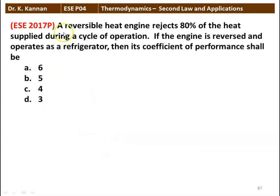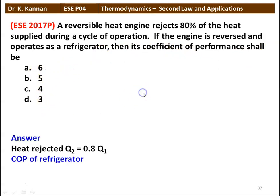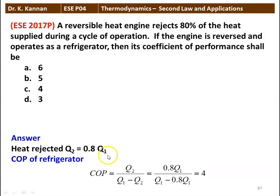Next question: a reversible heat engine rejects 80% of the heat supplied during a cycle of operation. If the engine is reversed and operates as a refrigerator, then its coefficient of performance shall be: options are 6, 5, 4, 3. The answer: heat rejected Q2 = 0.8 × Q1. COP of the refrigerator = Q2 / (Q1 − Q2) = 0.8Q1 / (Q1 − 0.8Q1) = 0.8 / 0.2 = 4. The answer is 4.